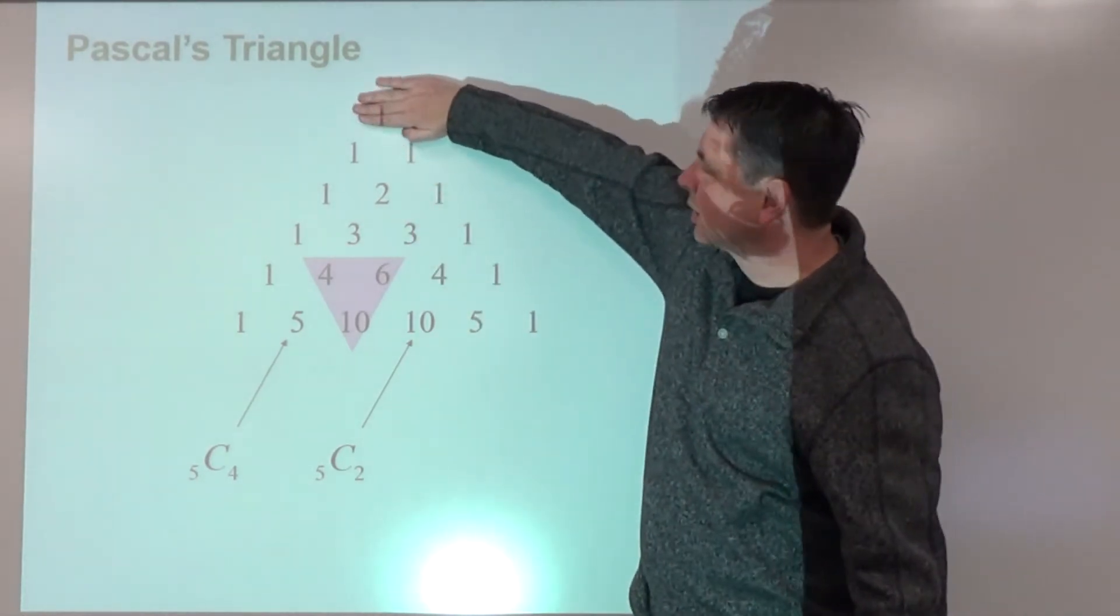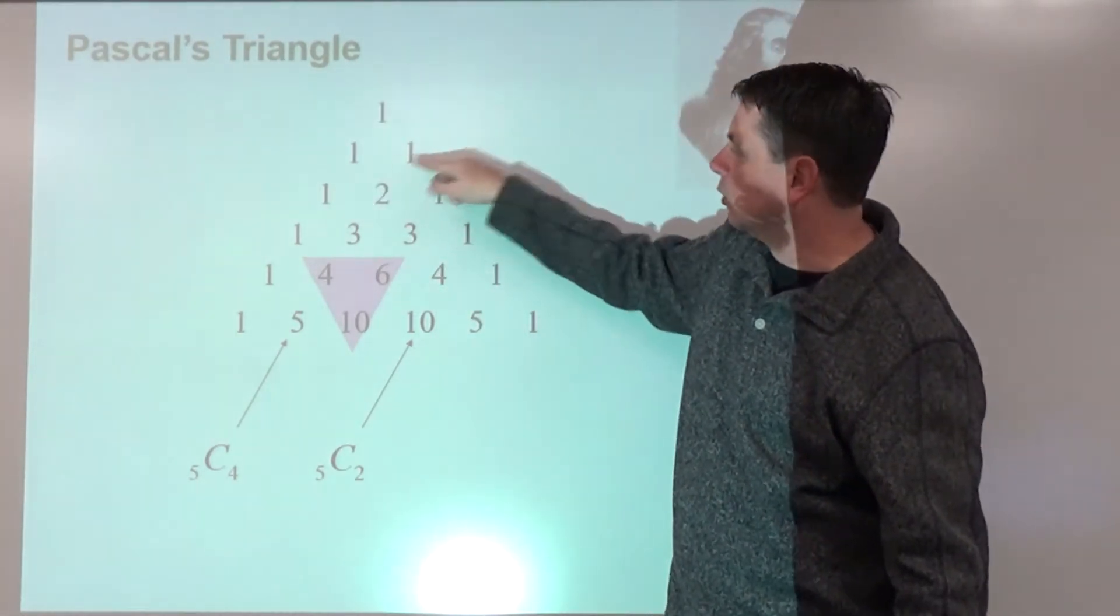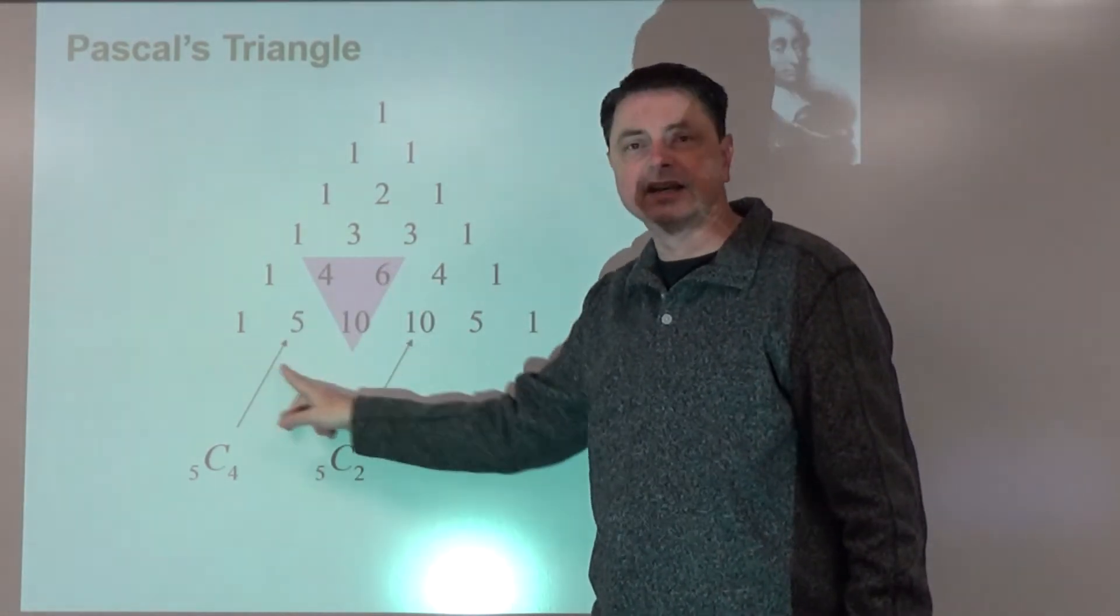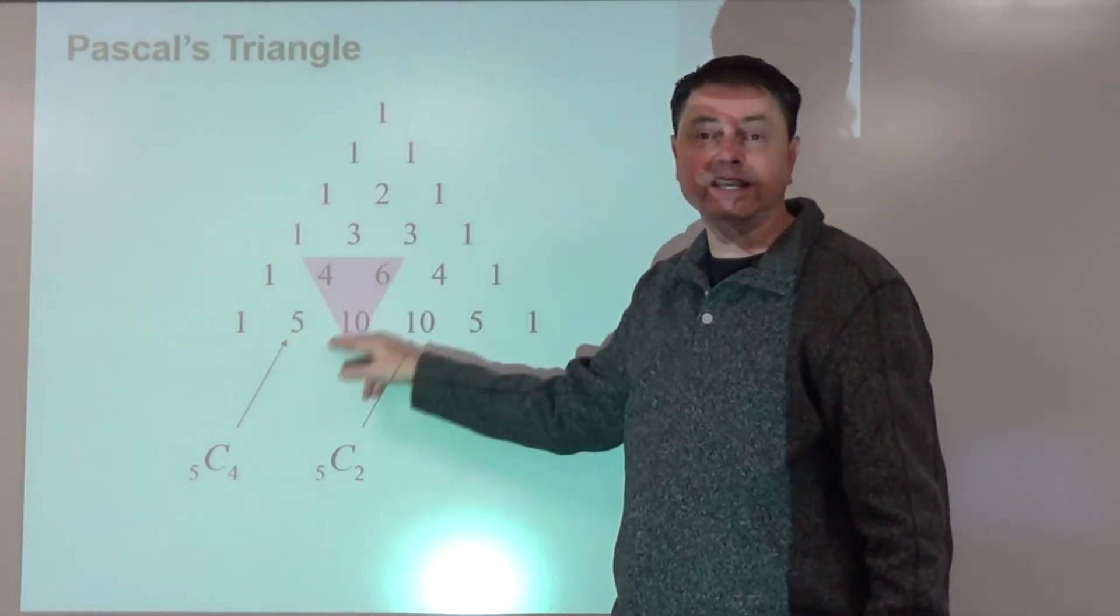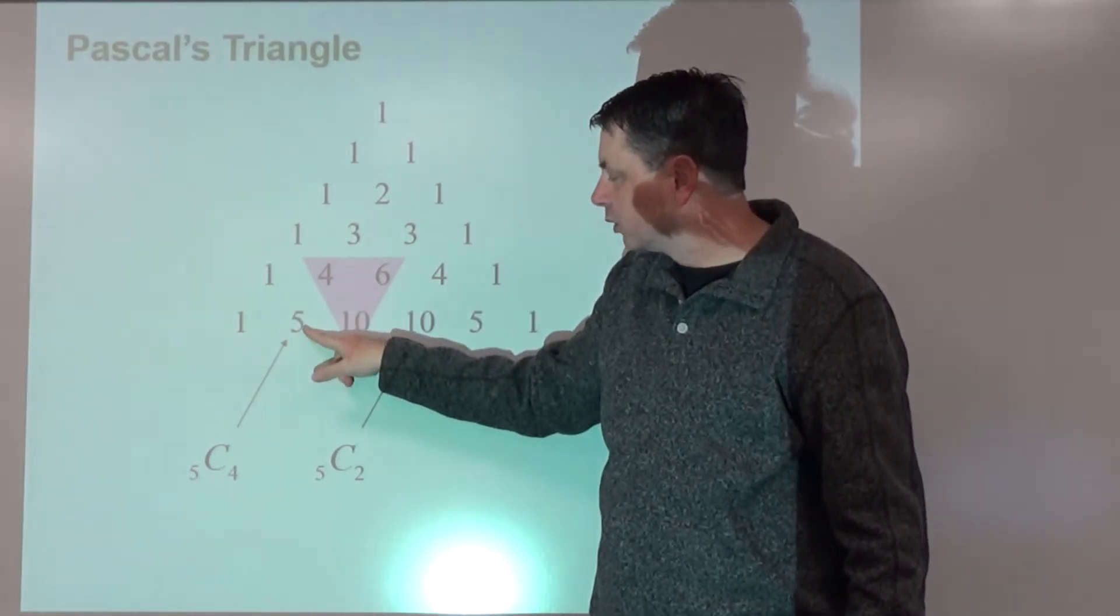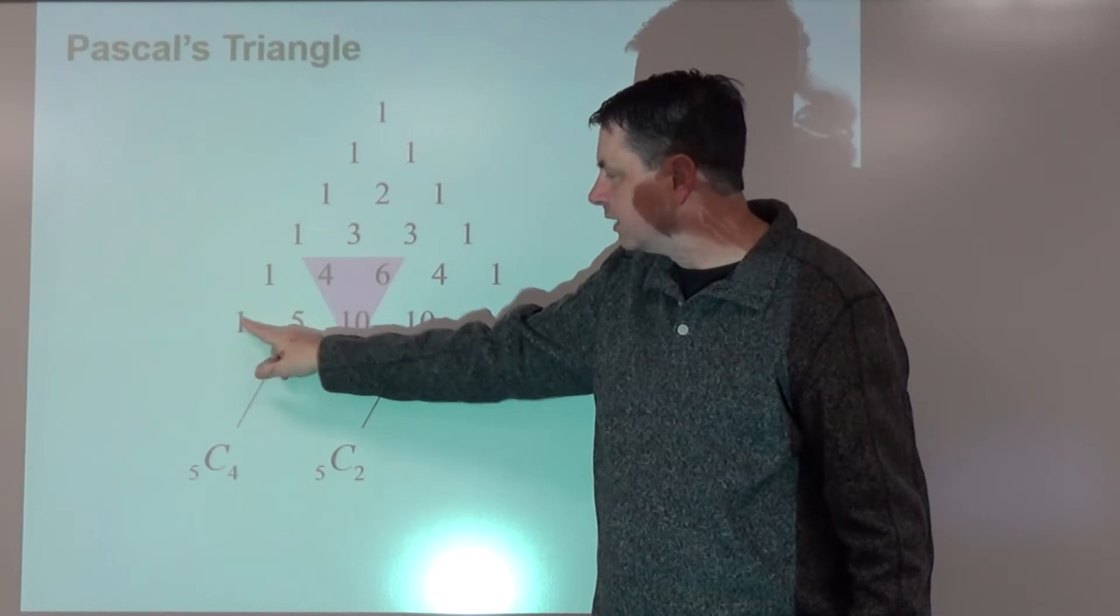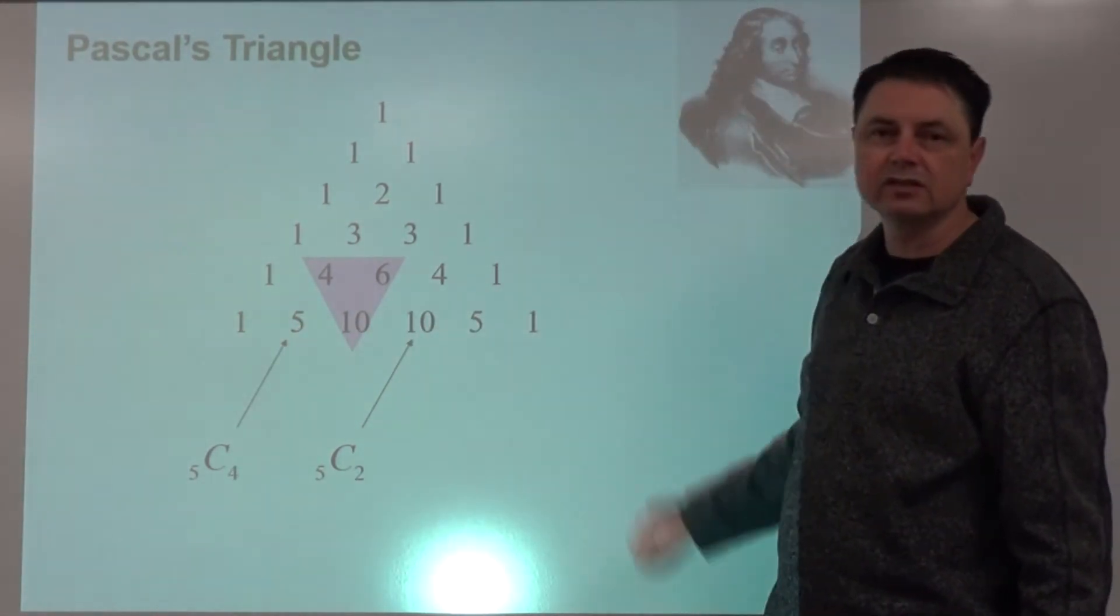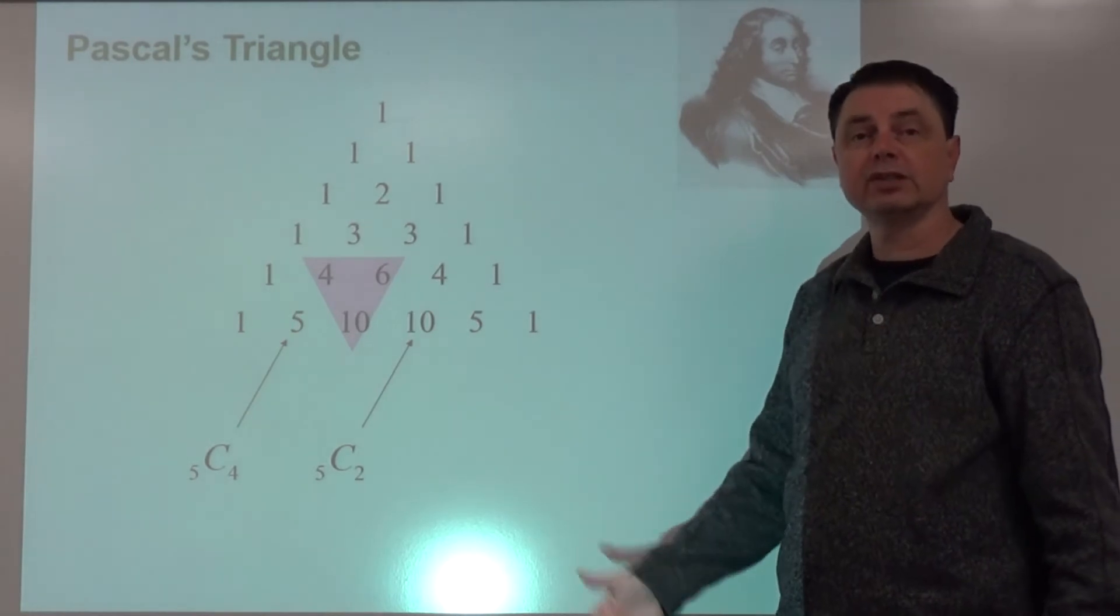And we could keep going. Turns out these numbers are combinations. So if we don't consider the top, when we say it starts here: row 1, row 2, row 3, row 4, row 5. Where that second number that identifies the row we're talking about, this one right here would be 5 choose 4, 5 choose 5, 5 choose 4, 5 choose 3, 5 choose 2.